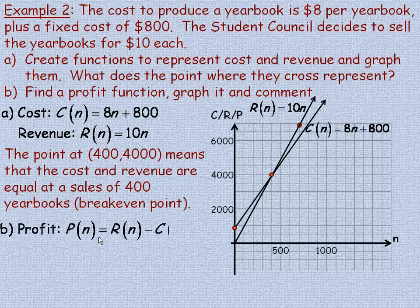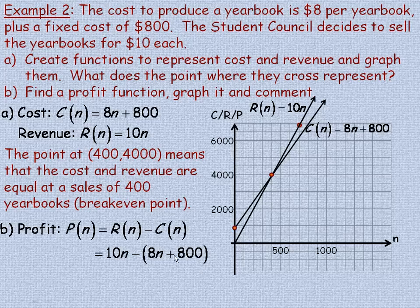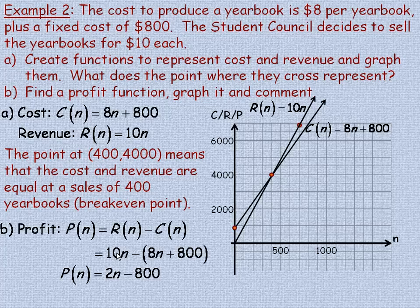For part B, the profit function: profit is revenue minus cost. We take the revenue function of 10N and subtract the cost function of 8N + 800. Notice we're subtracting a binomial, so we use parentheses: 10N minus (8N + 800). Removing the parentheses gives 10N minus 8N, which is 2N, minus 800. So the profit function is 2N minus 800. You're making $2 per yearbook in the variable portion, but you still have to cover the fixed $800.